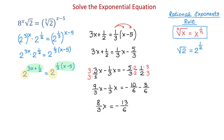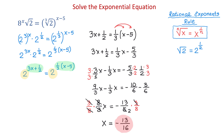Now, to solve for x, we need to eliminate the fraction 8 over 3. For this, we will multiply both sides by the reciprocal of 8 over 3, which is 3 over 8. On the left side, 3 cancels and 8 cancels and we are left with x. On the right side, we can divide 3 and 6 by 3 to get 2, and then we will get negative 13 over 16, since 2 times 8 is 16. So here we have the solution to this exponential equation.